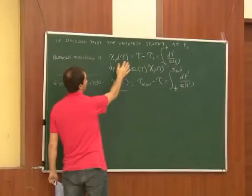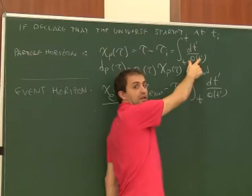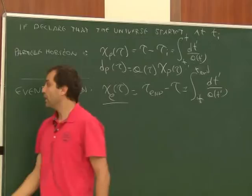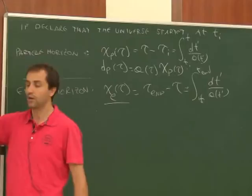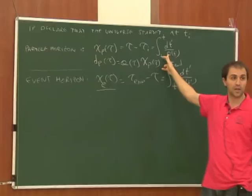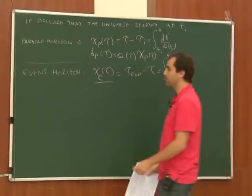To determine the size of the horizon quantitatively, we need to know the scale factor a as a function of time. These formulas are kinematic — they tell you that given a metric you can compute the horizon — but to get its actual size we need the dynamics of a. This is given by Einstein's equations.